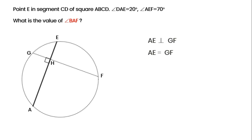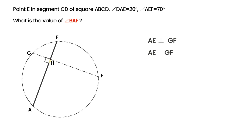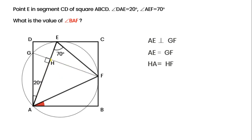We already have points A, F, E, and G on the same circle. From the principle that two equal chords intersecting within a circle produce equal corresponding segments, we get HA equals HF. So triangle HAF is an isosceles right triangle, and angle HAF is 45 degrees.